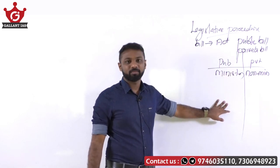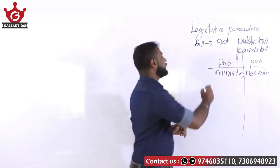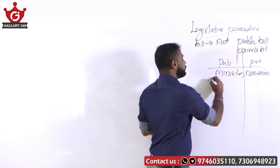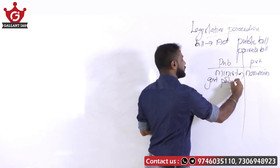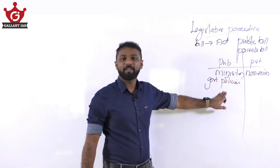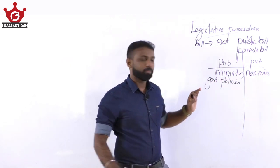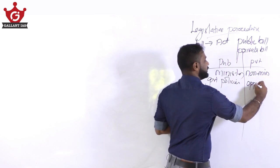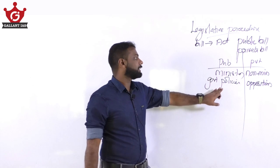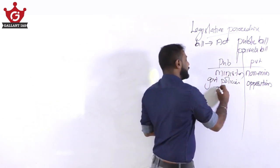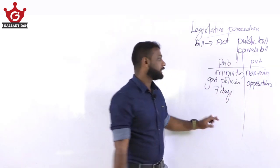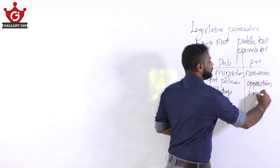The public bill is introduced by a minister, so it usually reflects the government policies. The private bill usually reflects the stand of the opposition or other members. To introduce a public bill, a seven-day notice has to be given, but for a private bill, a one-month notice period has to be given.